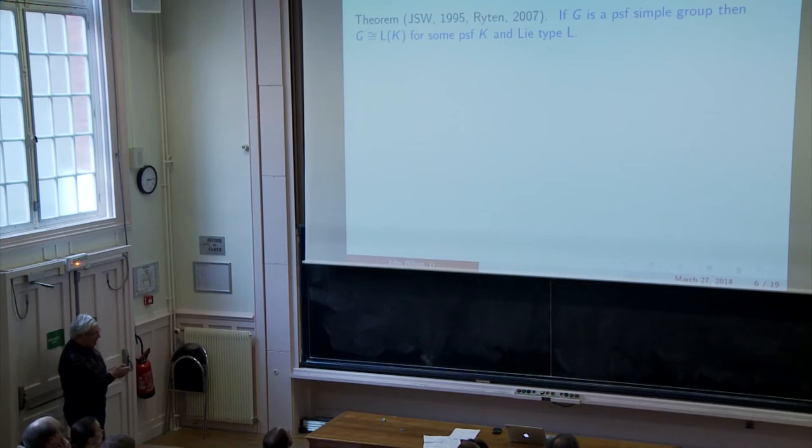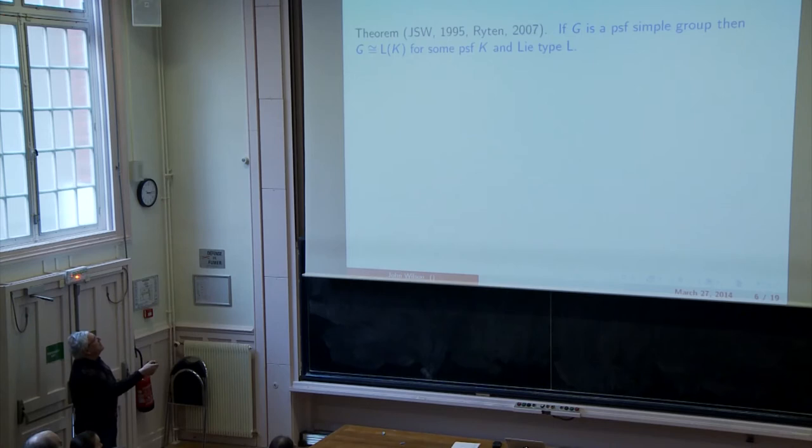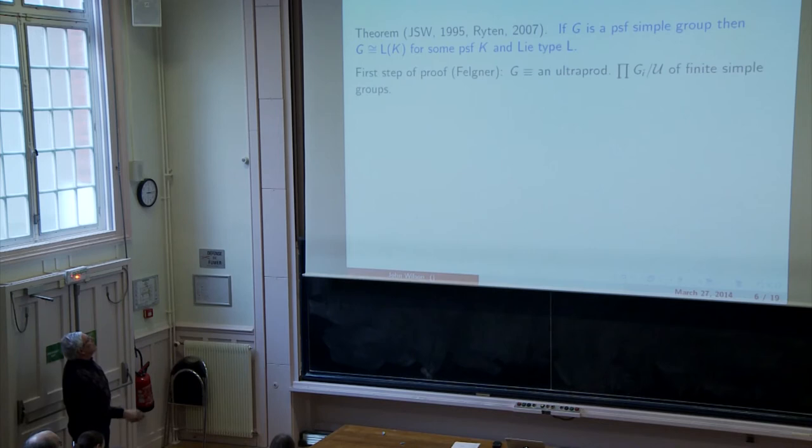Well, a long time ago I looked at these things. I actually looked at pseudo-finite simple groups. I wanted to classify them. And this is the classification of the pseudo-finite simple groups: any such group is isomorphic to L(K) for some pseudo-finite field K and some Lie type L. And the first step of the proof, done by Ulrich Felgner, was to show that G satisfying that hypothesis is elementarily equivalent to an ultraproduct of finite simple groups.